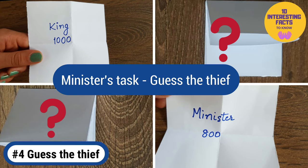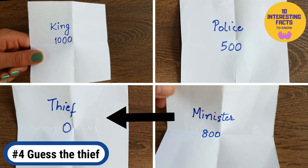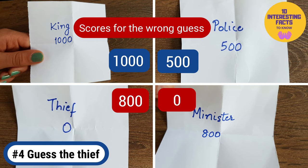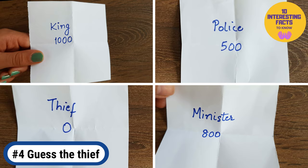If the guess is correct, the minister retains his 800 points. Otherwise, they are swapped with the thief's points so the minister gets none. Play several rounds of the game and the player with the maximum score in the end wins.